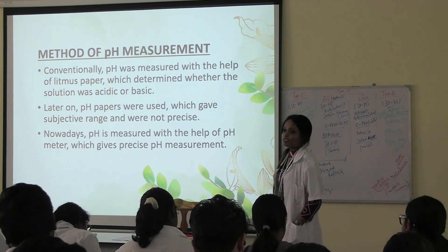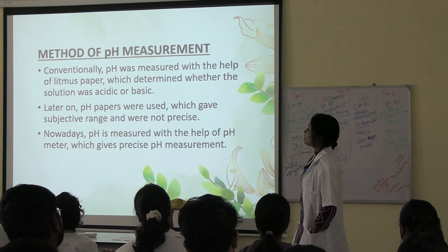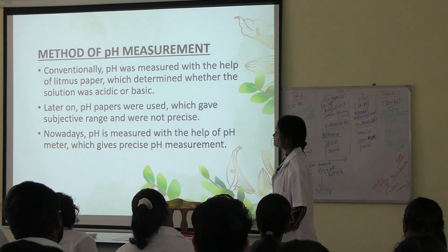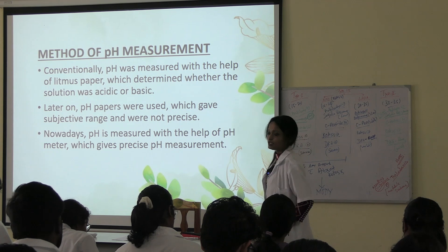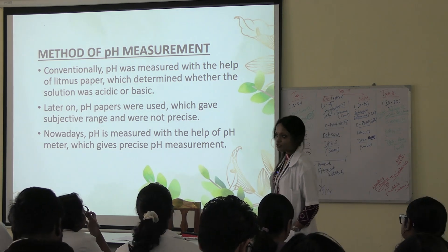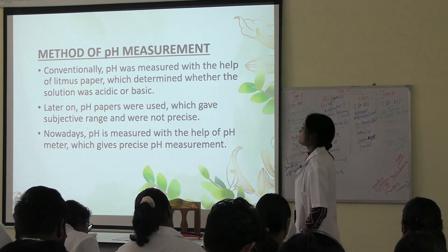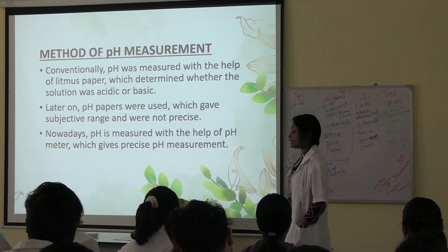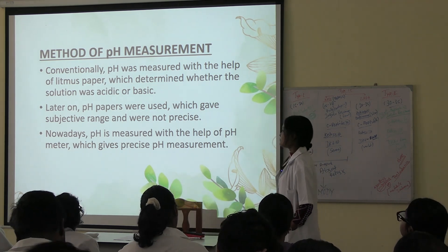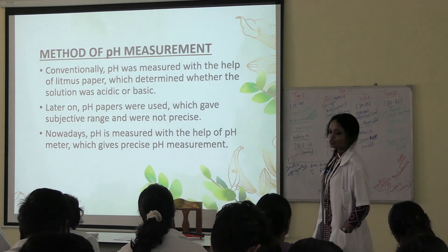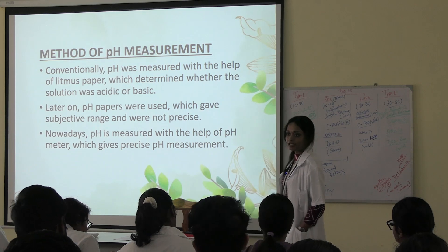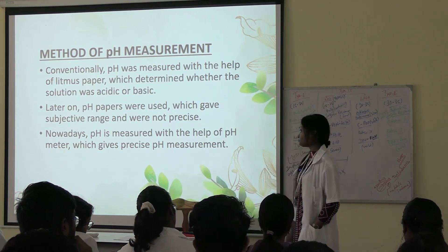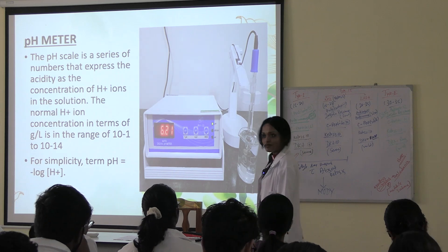Now, the method of pH measurement. Conventionally, pH was measured with the help of litmus paper, which determined whether the solution was acidic or basic. We can also detect pH at the bedside using litmus paper. Later, pH papers were used which gave a subjective range and were not precise. Nowadays, pH is measured with the help of a pH meter, which gives precise pH measurement. In the lab we use a pH meter to detect the pH of any solution.